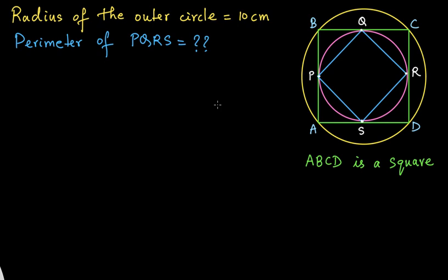In this video we have a geometric figure with a yellow outer circle, inside which is inscribed square ABCD, inside that is an inscribed pink circle, and inside that is inscribed quadrilateral PQRS. We are given the radius of the outer circle as 10 centimeters, and we need to find the perimeter of the inner blue quadrilateral PQRS.